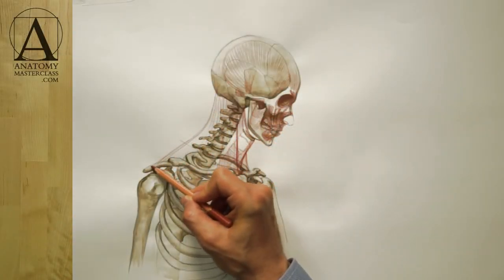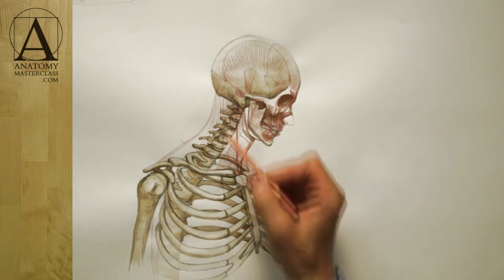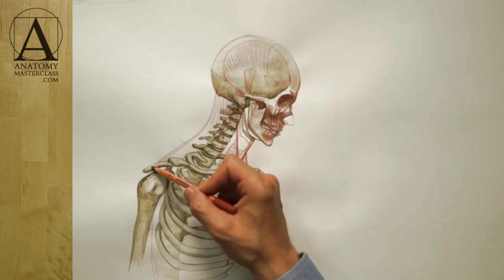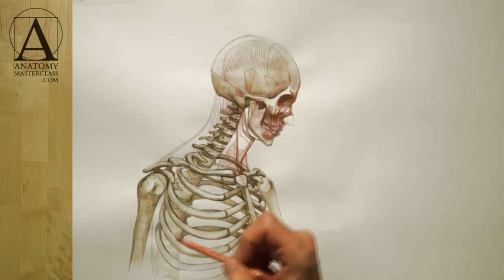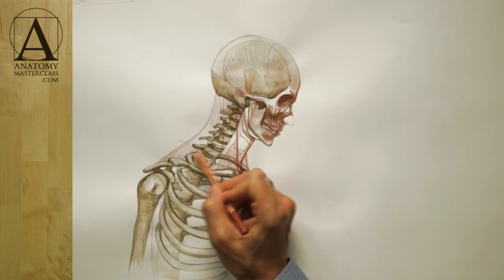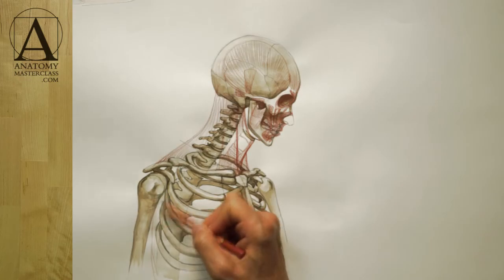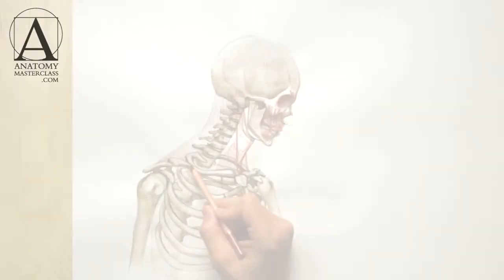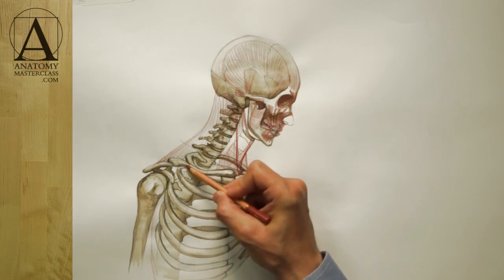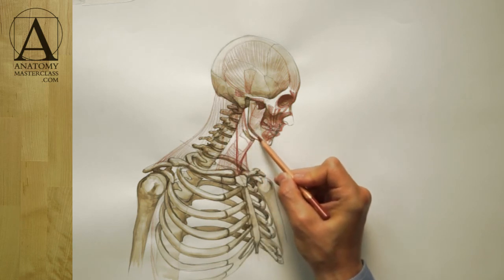The trapezium muscle covers the rear side of the neck. This diamond-shaped muscle begins from the base of the skull and vertebrae of the spine and inserts into the outer part of the collar bones and spines of the shoulder blades. The front of the neck is covered by a thin, flat muscle that is located between the collar bones and the lower jaw.